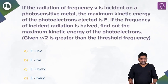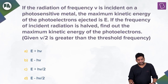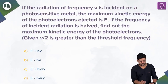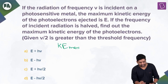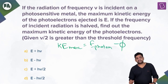This question says: if radiation of frequency ν is incident on a photosensitive metal, the maximum kinetic energy of photoelectrons ejected is E. We use Einstein's equation: K_max = energy of photon minus work function (φ).